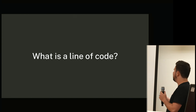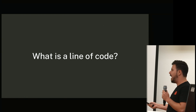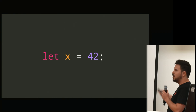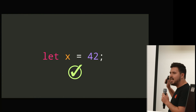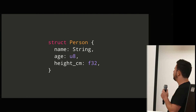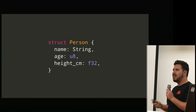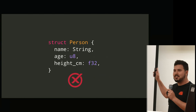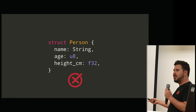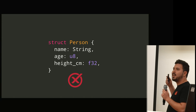To answer this question — how can we write a Rust program without a single line of code — we need to decide what a line of code actually is. So we'll start with some examples. Let x equals 42: is that a line of code? Yes, it's a line of code. But this — struct person, name is a string, age is a weight, and height in centimeters as F32 — is that a line of code? I'm gonna say no. This code doesn't actually do anything, it doesn't execute; it's just shaping our program, structuring it — we're just declaring a type.